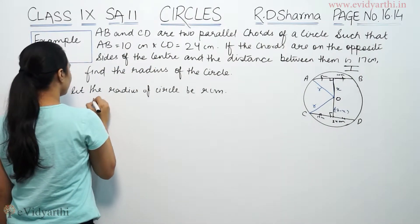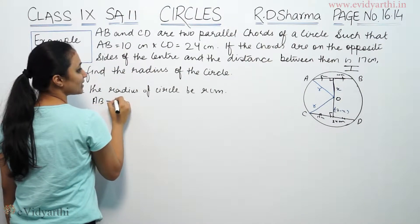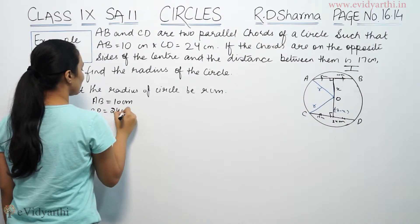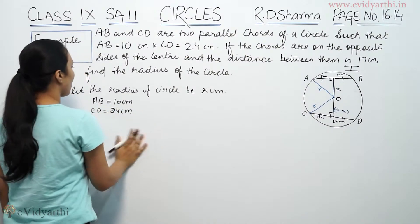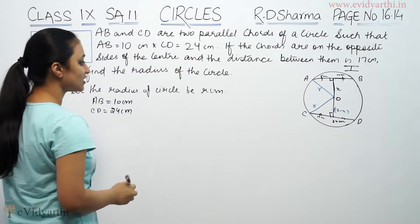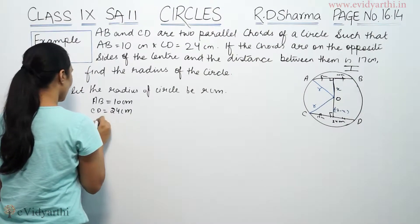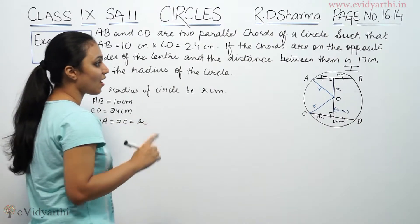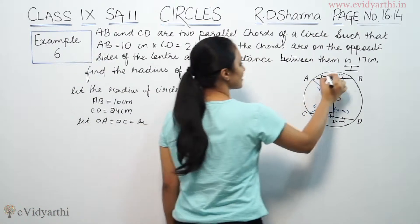First of all, AB length is 10 cm. CD length is 24 cm. Let OA equals OC equals r.